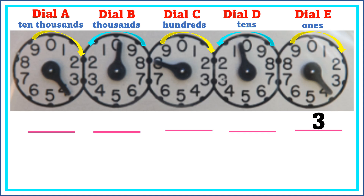In dial D, the movement of the pointer is counterclockwise, started at zero. The pointer has just passed zero and is in between zero and one, so we record it as zero because it has not yet reached one.